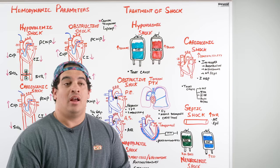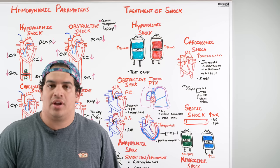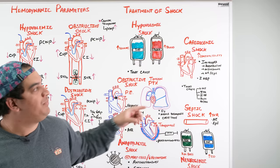Treatment of hypovolemic shock: if losing plasma volume (from GI, skin, or urinary losses), give IV fluids or oral fluids if tolerated. If hemorrhagic, give blood products. Ultimately, identify and treat the underlying cause.